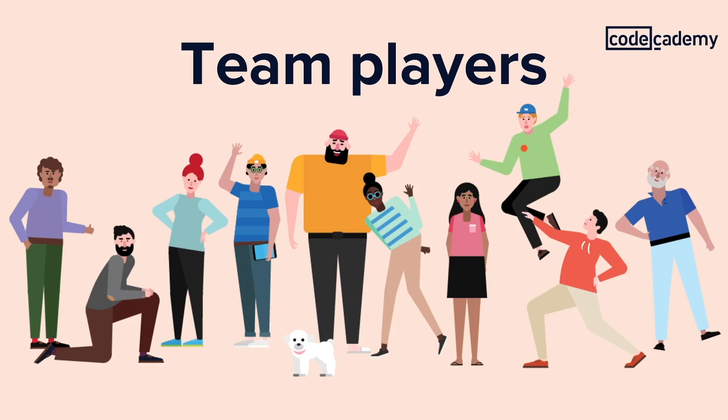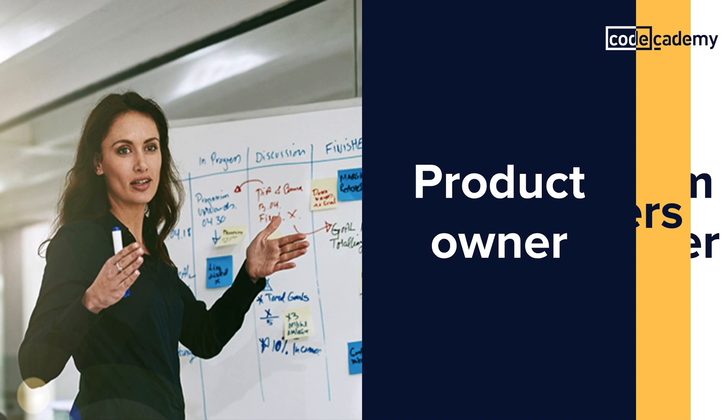Before we go any further, I want to quickly go over some roles you'll commonly see on a basic development team. First up is the product owner, who determines the product's direction. This person identifies what features should be prioritized and how the product should grow based on the business needs the product should address.